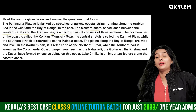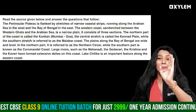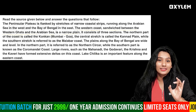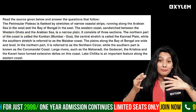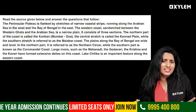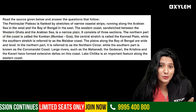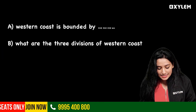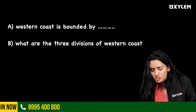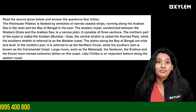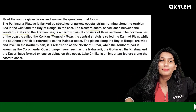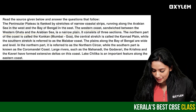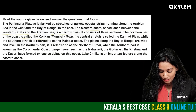It is a narrow plain. The second question is: what are the three divisions of the Western Coast? In this passage, we have to state the divisions. The northern part of the coast is called the Konkan Coast — that is the Mumbai and Goa region.